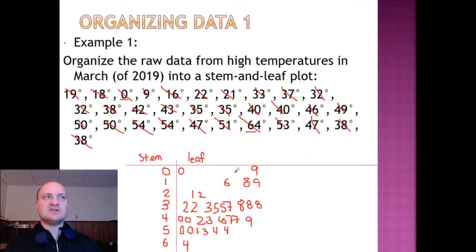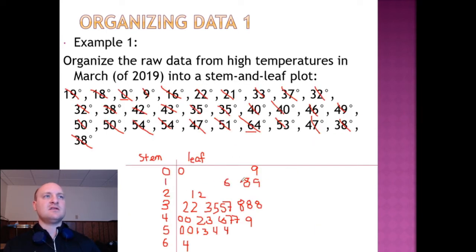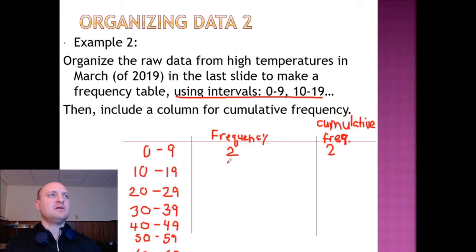How many leaves do we have between 0 and 10? Well, we have two of them. And so far our total number of values is 2. How about our 10 to 19? That would be 3. And that brings our cumulative total up to 5.